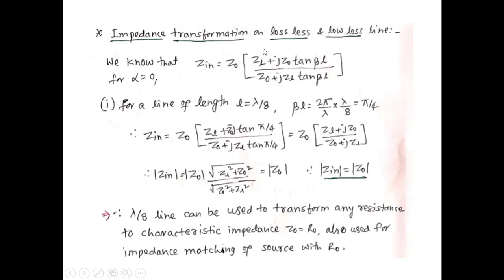Next is impedance transformation on lossless and low-loss transmission lines. For a lossless line (α = 0): Zin = Z₀·[Zl + jZ₀·tan(βL)] / [Z₀ + jZl·tan(βL)]. For a line of length L = λ/8: βL = (2π/λ)·(λ/8) = π/4. Substituting tan(π/4) = 1 gives Zin = Z₀·(Zl + jZ₀)/(Z₀ + jZl), and taking the magnitude: |Zin| = Z₀. Therefore a λ/8 line can be used to transform any resistance to the characteristic impedance Z₀ = R₀, useful for impedance matching.